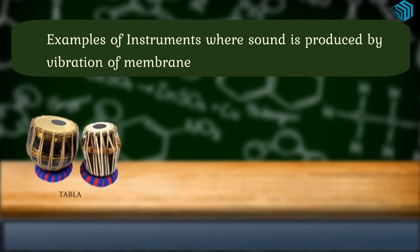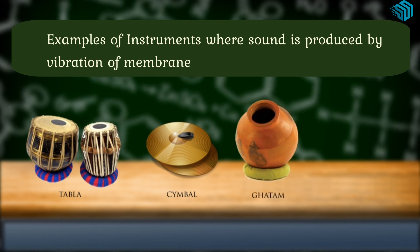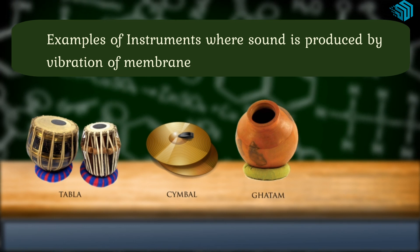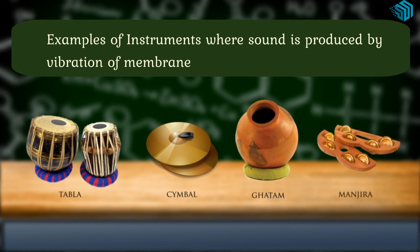Musical instruments produce sound due to the vibration of stretched skin or membranes. Example of instruments where sound is produced by vibration of membranes are Tabla, symbols, ghatam, kartal and manjeera.